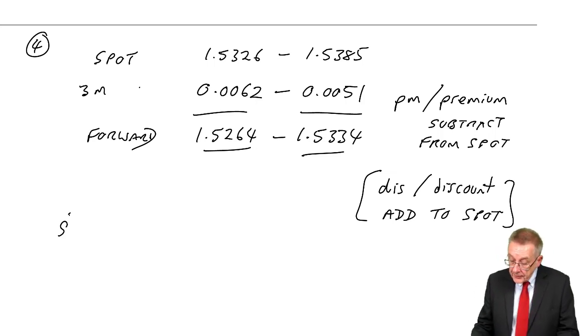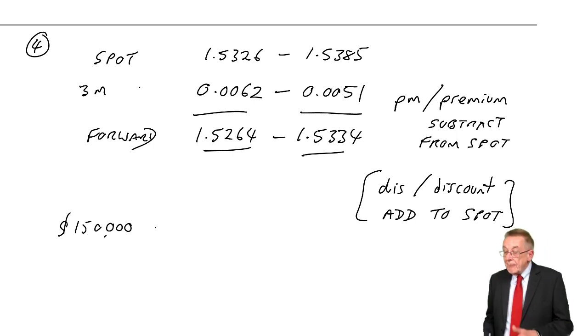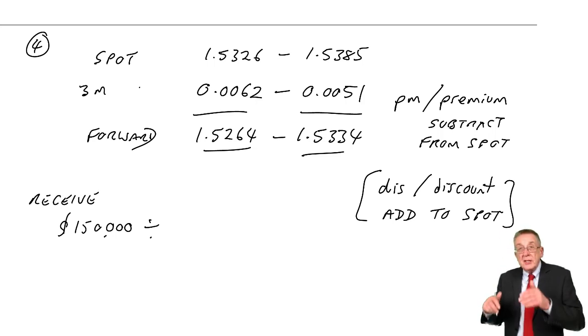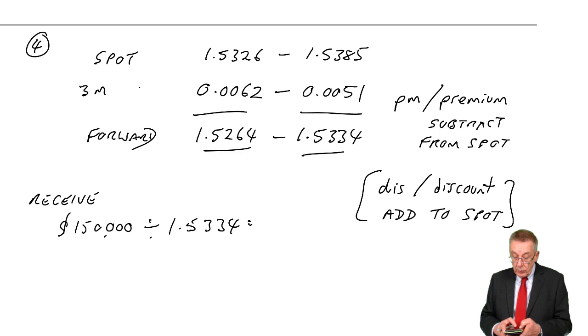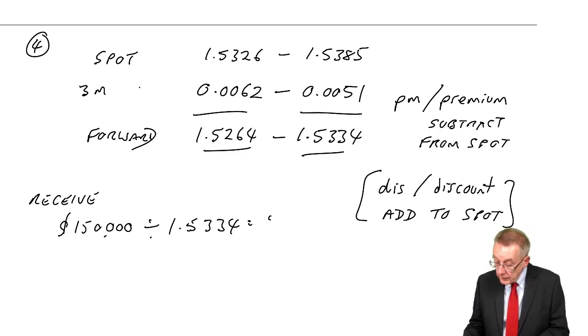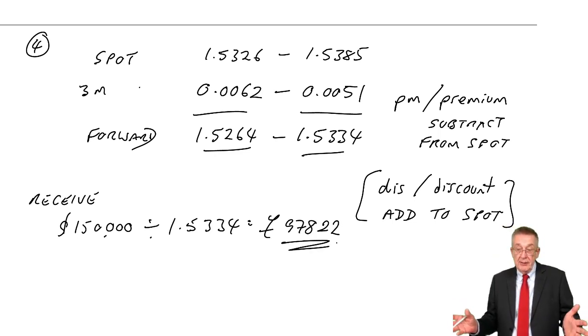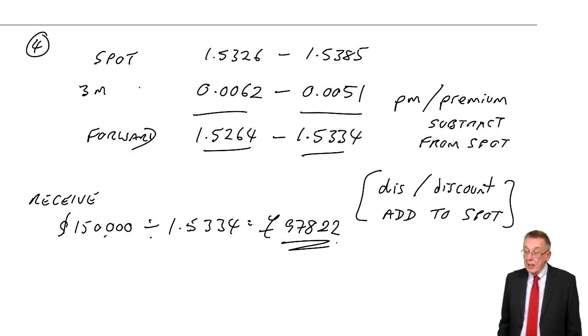We're going to receive $150,000. There are 1.5 dollars to the pounds, so we'll divide by the exchange rate. And because we're receiving money, we're going to be selling dollars to convert to pounds. We'll convert at the higher rate, 1.5334. So 150,000 divided by 1.5334 would convert to 97,822 to the nearest whole number when it's foreign exchange.